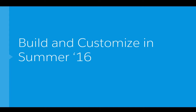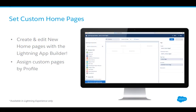There are even more ways for admins to customize and build using Lightning in Summer 16. A highly requested feature is the ability to set custom homepages. Now as an admin, you can create and edit new homepages with the Lightning App Builder. You can find out what users by profile need, and drag in different things like report charts, filtered lists, or rich text to make the homepage useful for each user.